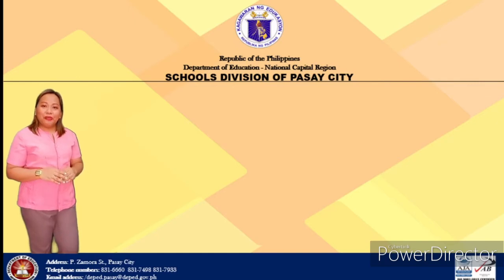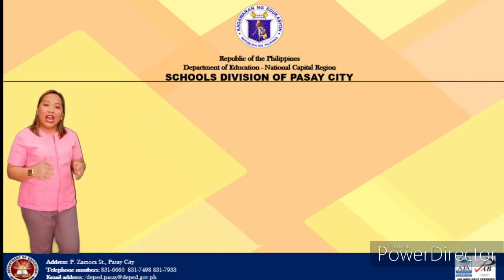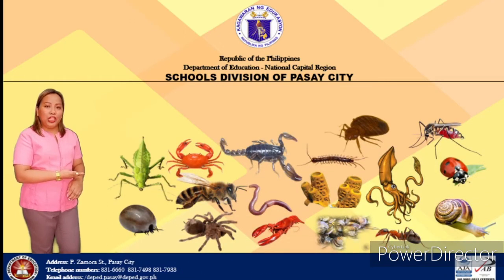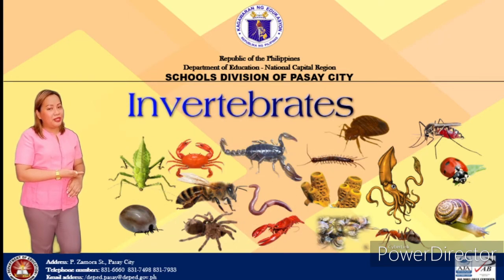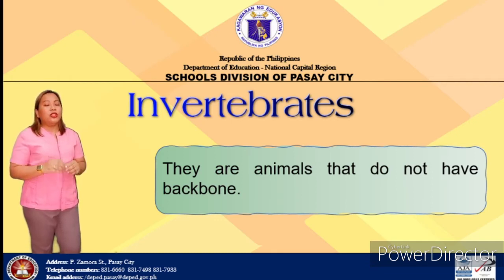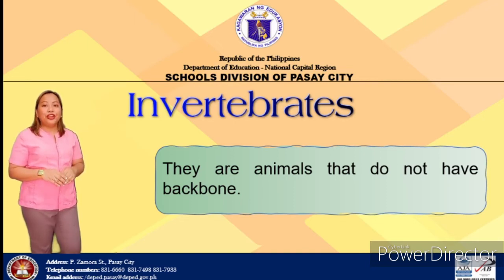In the previous lesson, you studied the group of vertebrates and their characteristics. Now you are about to study the other group of animals — the invertebrates. Observe the animals shown in the picture. These animals belong to the group of invertebrates. Invertebrates are animals that do not have backbone. They are usually small, moving animals. They do not have a well-developed brain, and they have a simple nervous system.